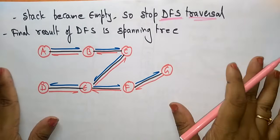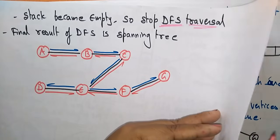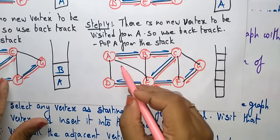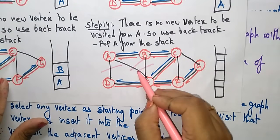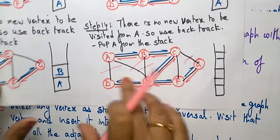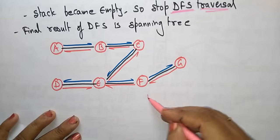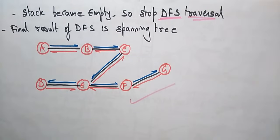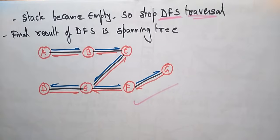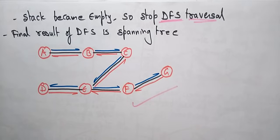The stack became empty so we stop the DFS traversal. The final result of DFS is the spanning tree. According to the algorithm, remove the unused edges — there are four unused edges to remove. This gives the final depth first search spanning tree without any closed loops. Thank you.